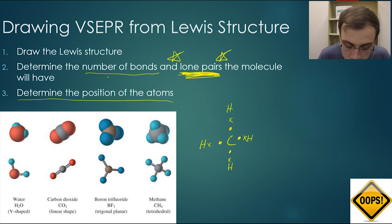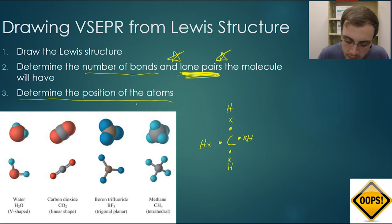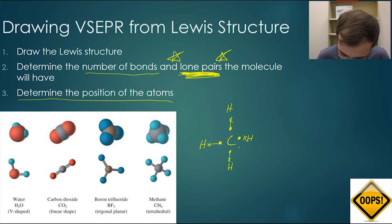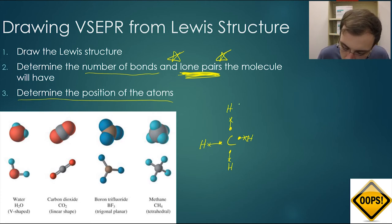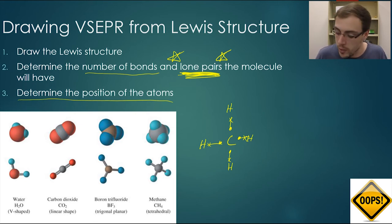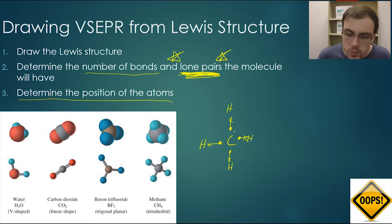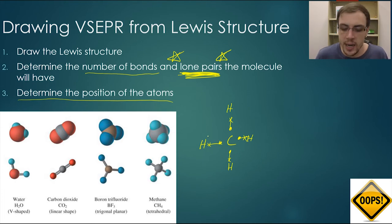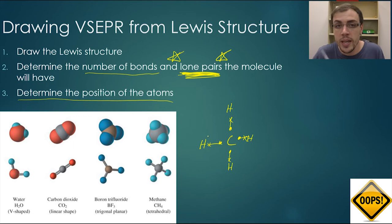Now we need to determine the number of bonds: one, two, three, four different bonds. We look at lone pairs — are there any lone pairs of electrons in methane? The answer is no, so we don't need to worry about that. A lot of people also get into trouble here by thinking the 2D structure is how it actually looks, but the answer is no.